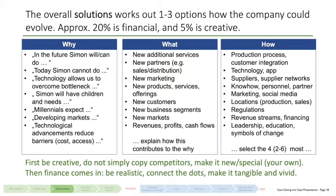If Simon has children, for instance, he has new needs. Try to explain why it is that additional services help him most — why not new products?